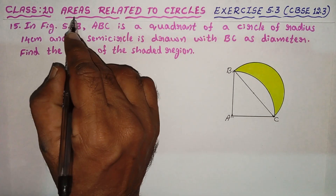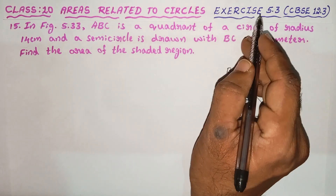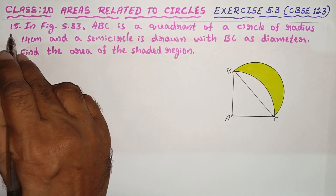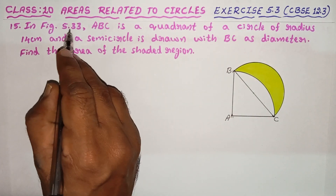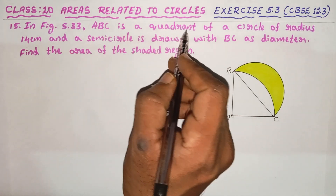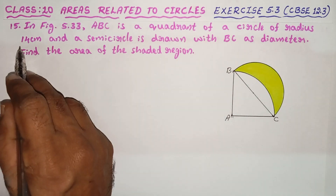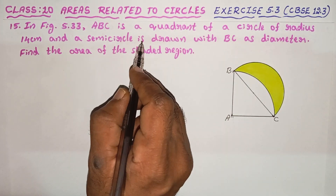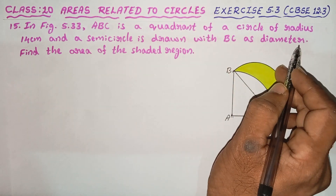Class 10, Areas Related to Circles, Exercise 5.3. In figure 5.33, ABC is a quadrant of a circle of radius 14 cm, and a semicircle is drawn with BC as diameter.